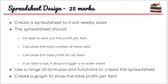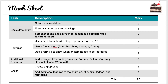The first thing is we're going to create a spreadsheet to track weekly sales. We need to make sure the spreadsheet calculates profit per item, the total number of items sold, the total profit, and if an item is low we need to trigger a reorder event. We're going to use formulas and functions to create the spreadsheet, and we need to make sure we are completing a graph. There are 25 marks in total, and during this video I'm going to go through every single one of these things so that you can get as many marks as possible.